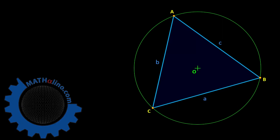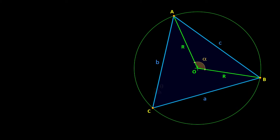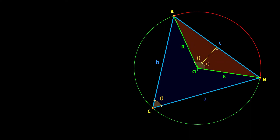We have a circle circumscribing triangle ABC. The question is: what is the radius of the circle? We have central angle Alpha and inscribed angle Theta, both intercepting the same arc, so Alpha = 2·Theta. Now let us bisect angle Alpha, giving two equal halves of Theta. Because this triangle is isosceles, it follows that side C is also bisected.